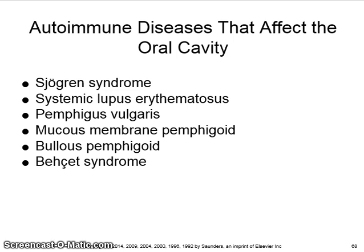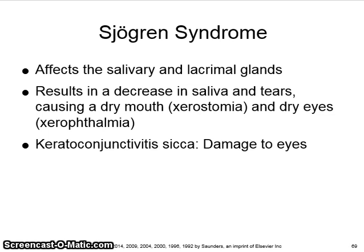Autoimmune diseases that affect the oral cavity include Sjogren's syndrome, systemic lupus erythematosus, pemphigus vulgaris, mucous membrane pemphigoid, bullous pemphigoid, and Behcet syndrome. Sjogren's syndrome affects the salivary and lacrimal glands, resulting in a decrease in saliva and tears, causing dry mouth or xerostomia and dry eyes or xerophthalmia. Keratoconjunctivitis sicca causes damage to the eyes.